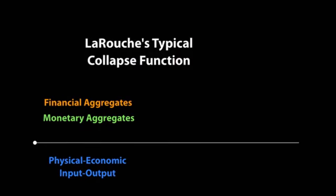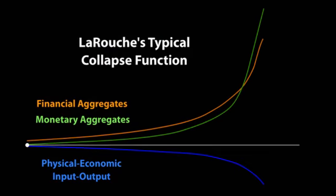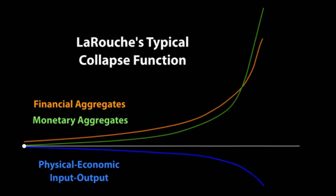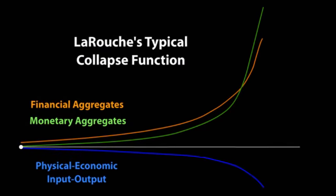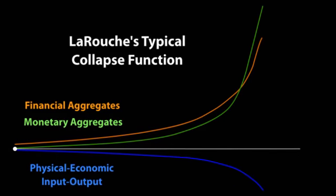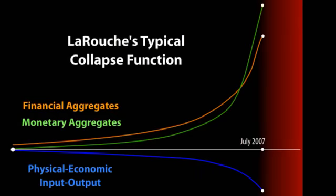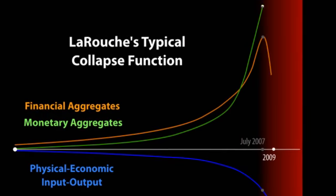At the same time, essentially since 1966 — under the influence of the Vietnam War economy — we've had a skyrocketing increase in the amount of monetary obligation. We've also had an increase in the financial aggregates. But now we've moved to a period in which the financial aggregates have begun to fall.